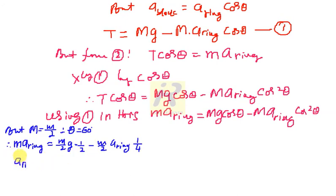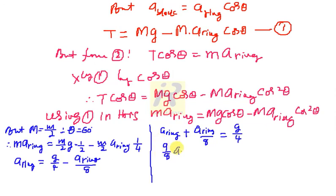So, then what I left with, a ring is equal to, it is g divided by 4 minus, it is a ring divided by 8. Now I have to solve this one. So, this will be, it is a ring minus, otherwise it is plus when I bring this one on this side, it is a ring divided by 8 is equals g divided by 4. So, when I take a ring as common and this becomes 9 divided by 8, a ring is equals g divided by 4.